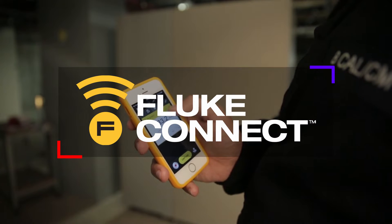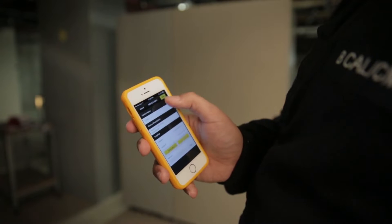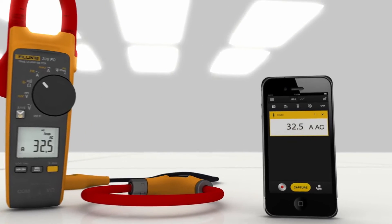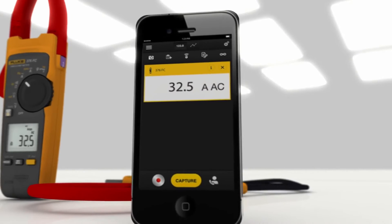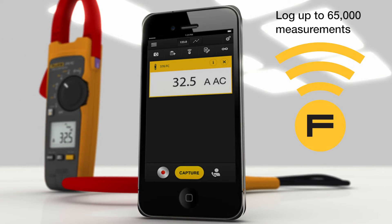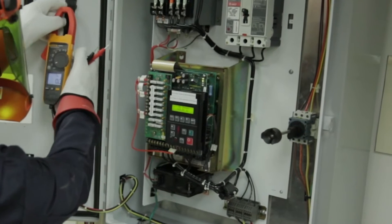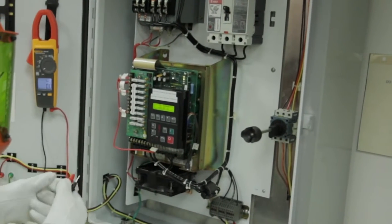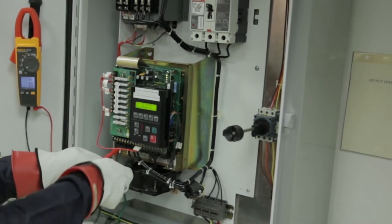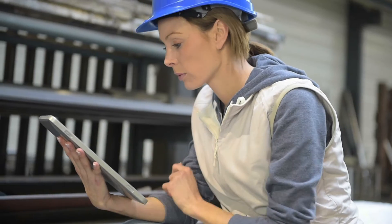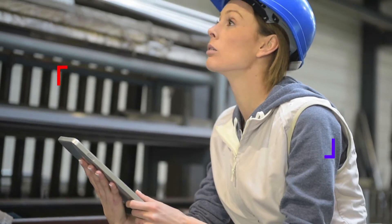For example, Fluke Connect is an app that can communicate with compatible Fluke handheld testers. A tester can send measurement results to the phone or tablet a safe distance away. Trend analysis can be made and results shared with other team members via the cloud to figure out what the problem is and what needs to happen to get things fixed quickly.